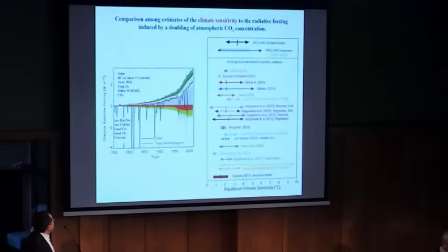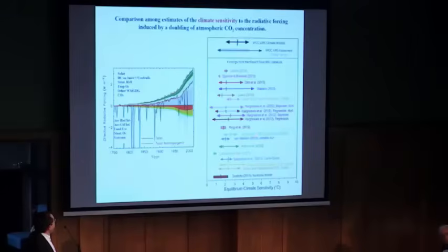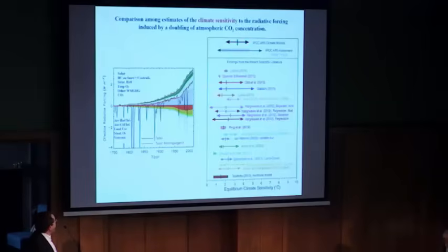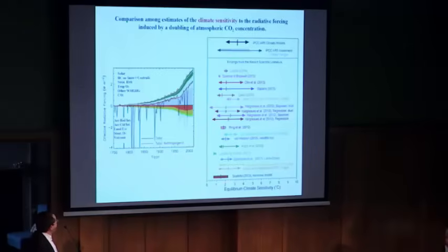The problem with the climate is that an important issue is how sensitive the climate is to greenhouse gases. Here you see several authors with error bars on the estimate of equilibrium climate sensitivity. The IPCC models put it between 1.5 and 4.5, but there is no agreement between the others. I believe that the climate sensitivity is about 1 to 2, and with this climate sensitivity to greenhouse gases there will be no big problem, as we will show later.